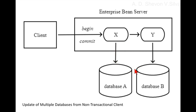If a message-driven bean's message listener method is configured with the Required transaction attribute, the container automatically starts a new transaction before delivery of the message, and hence before invocation of the method. Jakarta Messaging requires that the transaction be started before the dequeuing of the message. The container automatically enlists the resource manager associated with the arriving message and all resource managers accessed by the message listener method within the transaction. It is illegal to associate Jakarta Transaction transactional interceptors with enterprise beans.